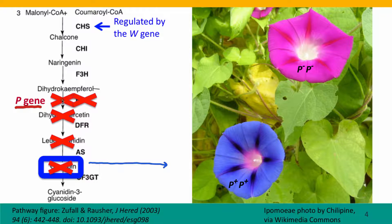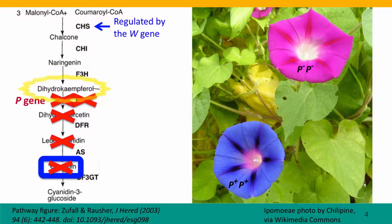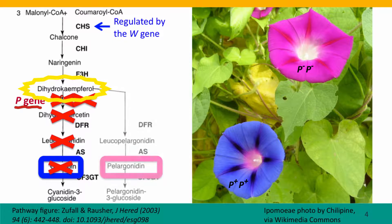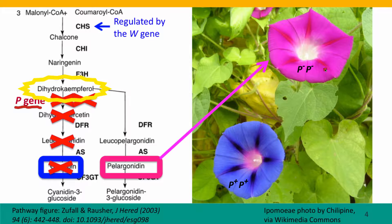That step being knocked out means that the intermediates are not produced and the blue pigment is not produced. What happens next is parallel to what happens in phenylketonuria — mutations in the gene for phenylalanine hydroxylase. Now that this part of the pathway is blocked by a mutation in the P gene, the substrate for this enzyme accumulates. It's called dihydrochemphorol. And this substrate is converted by a parallel pathway into the bright pink pigment called pelargonidin, which gives the pink morning glories their color.